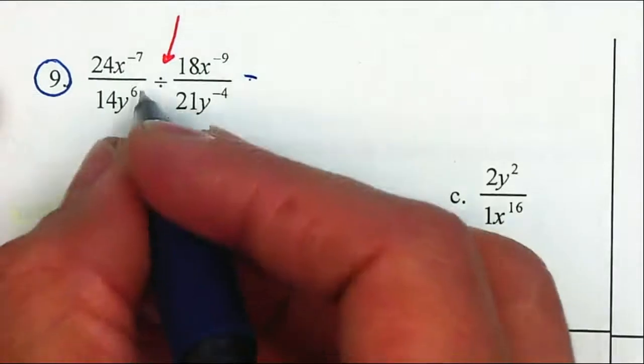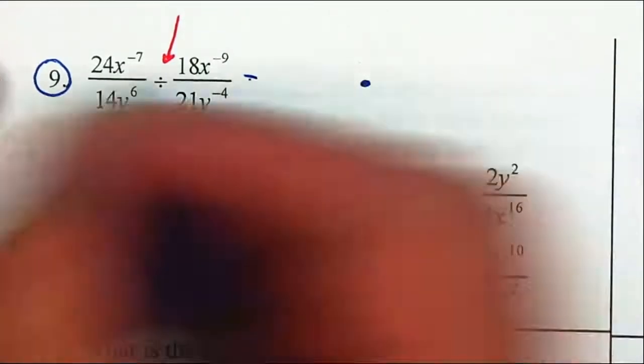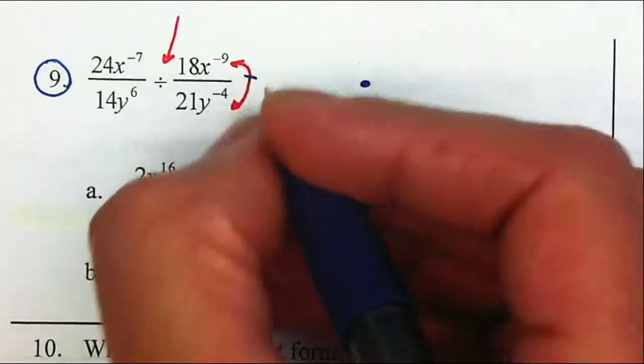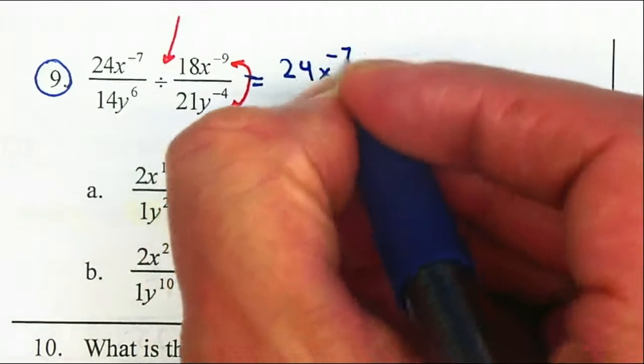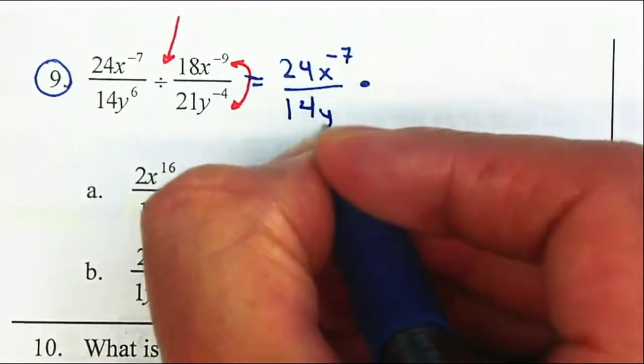So in order to be able to simplify this, I'm going to change my division to a multiplication by taking the reciprocal of the second fraction. So the first fraction will stay exactly as it is.